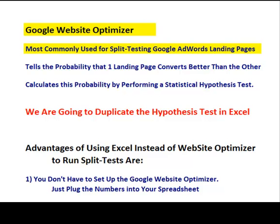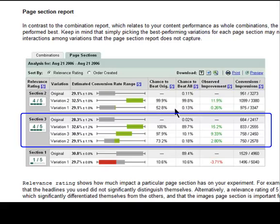The Website Optimizer allows you to create different variations of one landing page and then evenly distributes the clicks to the different variations. It then calculates the probability that one landing page variation converts better than the other, and uses a statistical hypothesis test to do that — and that's what we're going to create here in Excel.